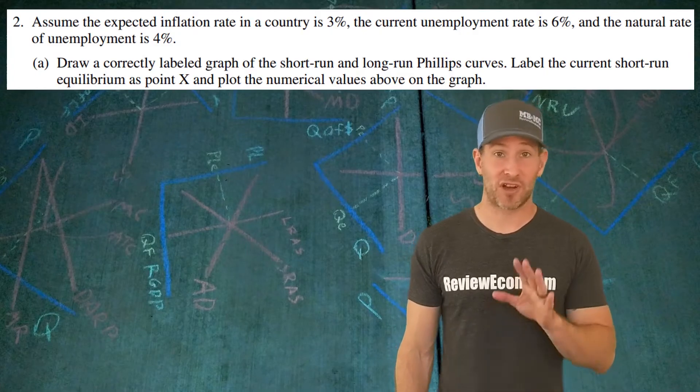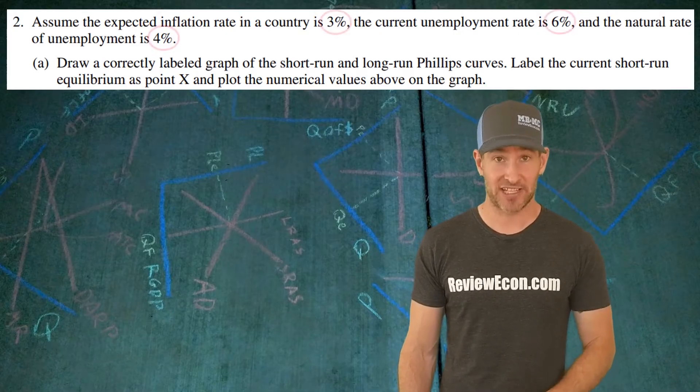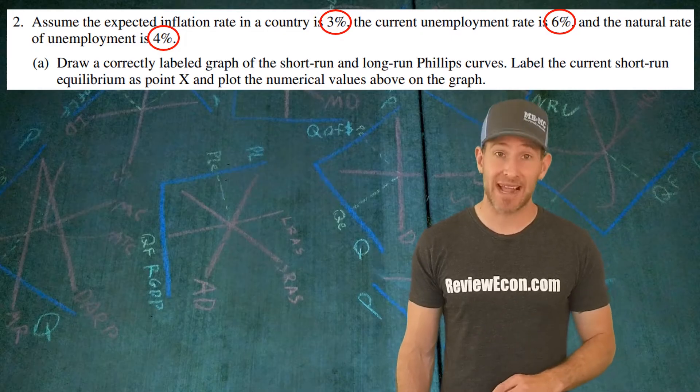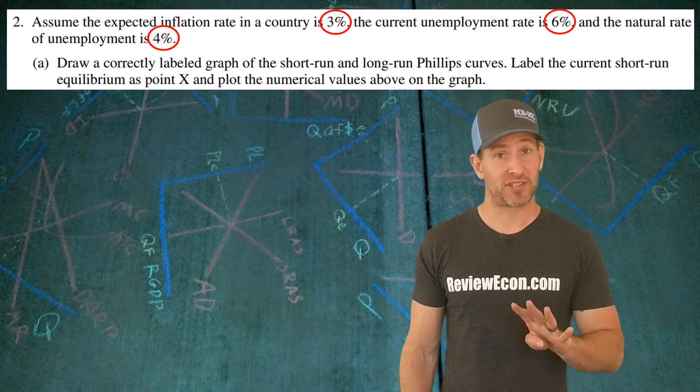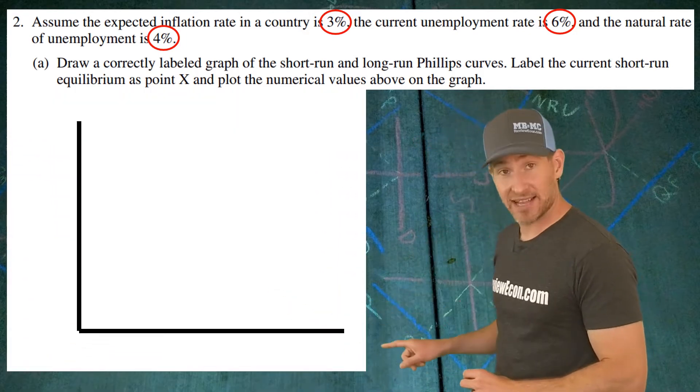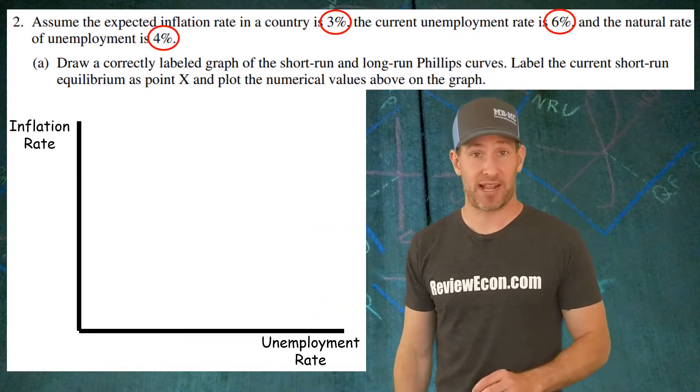To start this question off, we have to draw a short run and long run Phillips curve for an economy that has an expected inflation rate of 3%, a current unemployment rate of 6%, and a natural rate of unemployment of 4%. Start off by labeling your axes. On that X axis, we have the unemployment rate. On the Y axis, we have the inflation rate.